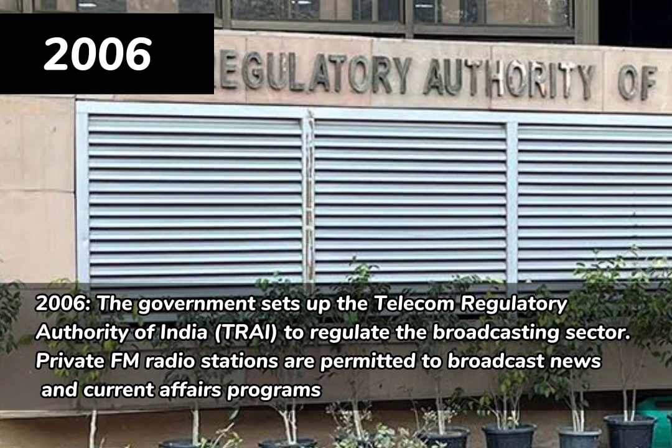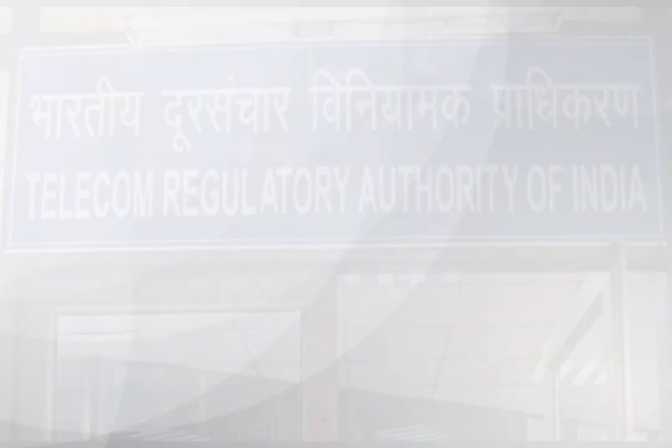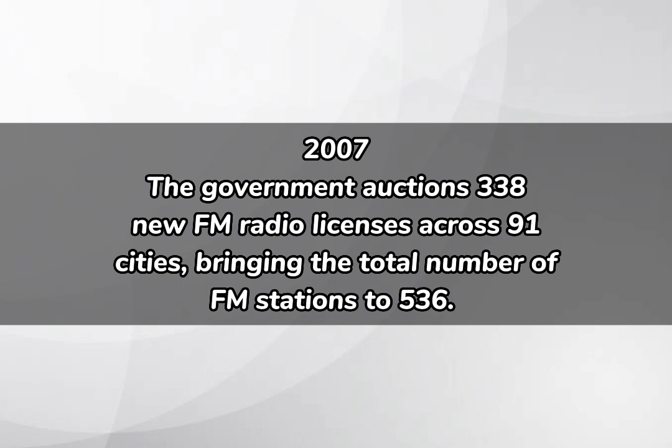In 2006, the government set up the Telecom Regulatory Authority of India, TRAI, to regulate the broadcasting sector. Private FM radio stations were permitted to broadcast news and current affairs programs. In 2007, the government auctioned 338 new FM radio licenses across 91 cities, bringing the total number of stations to 536.